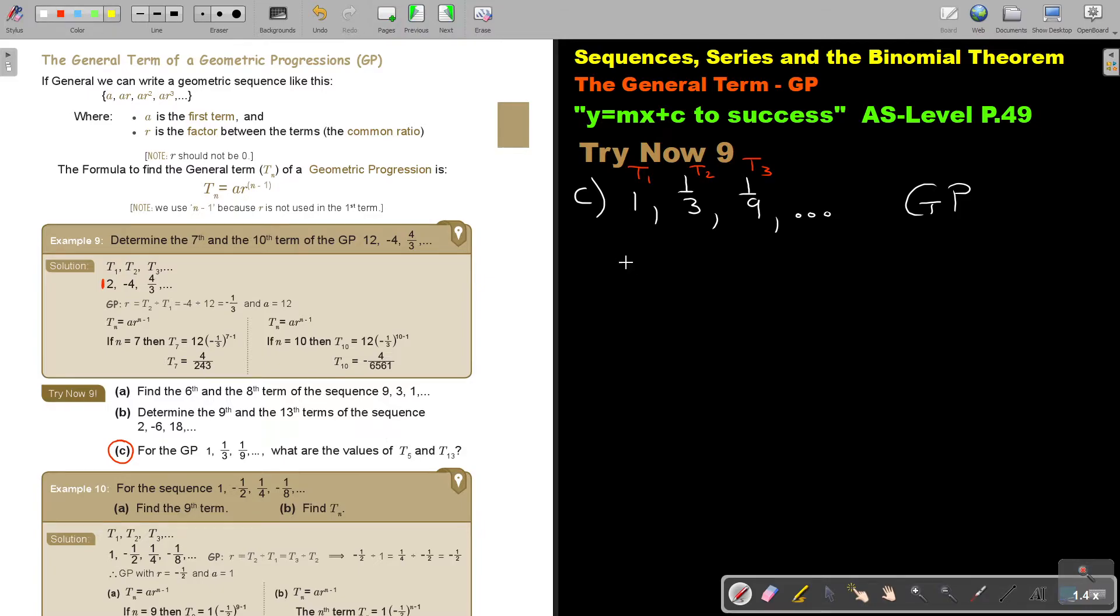Now, first, before we do that, T2 divided by T1 will give you the value of R. Not minus, just divide. So that will be 1/3 divided by 1, which is very nice because then it's just 1/3. And the value of A is 1.